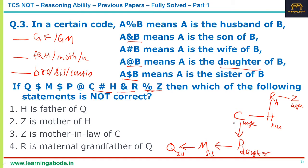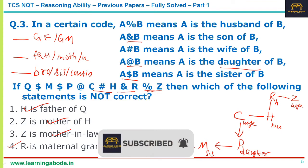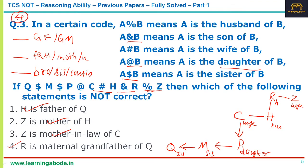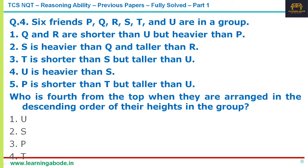Now checking which statement is NOT correct: H is the father of Q — correct, since C is the mother and H is her husband. Z is the mother of H — correct. R and Z are the parents of H — correct. Z is the mother-in-law of C — correct. The statement 'R is the maternal grandfather of Q' is wrong, because R is H's father, making R the paternal grandfather of Q. Answer option 4.